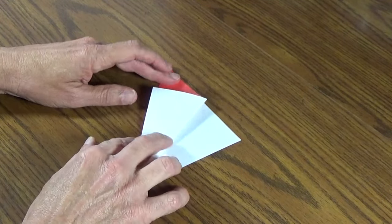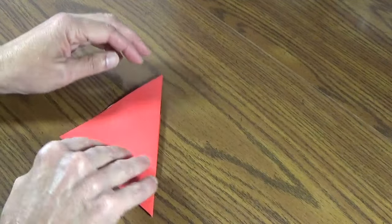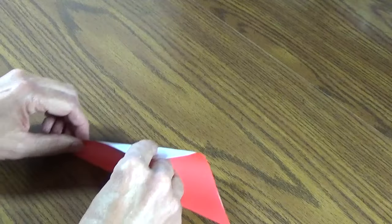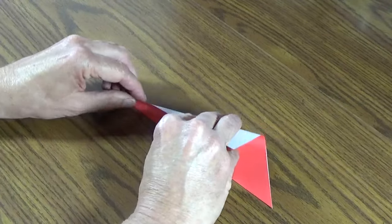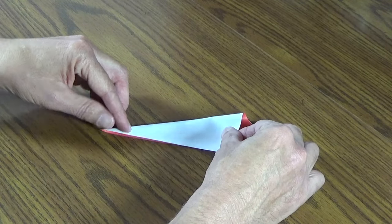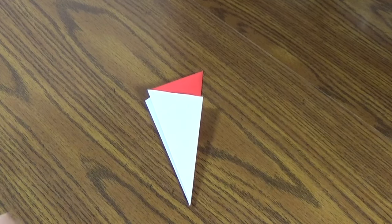This fold is over here and we're going to do the same thing with the other side, so flip it over. Fold it over to the other edge so it'll be an exact match to your other side. So now that side looks like that too.